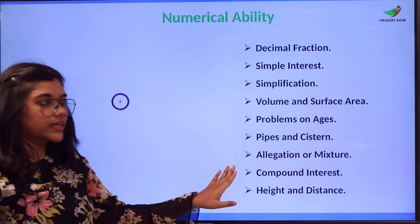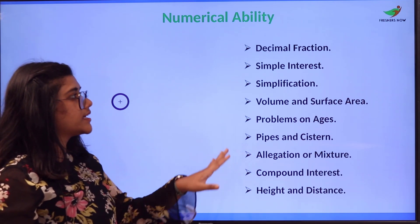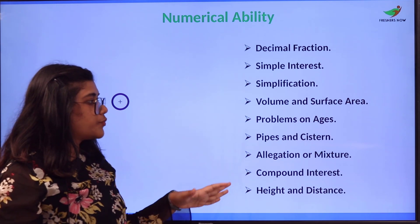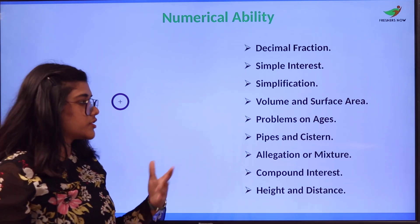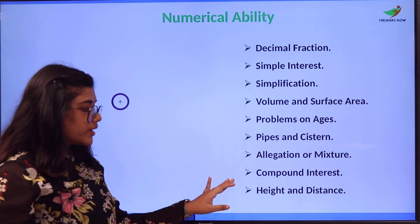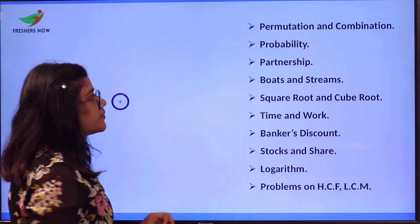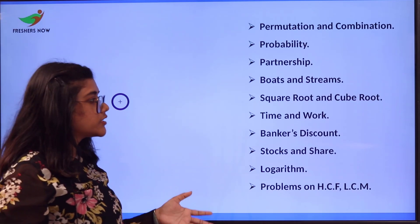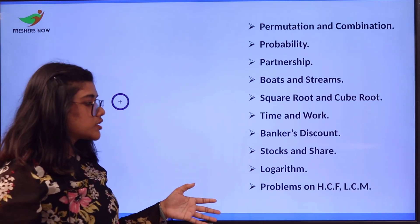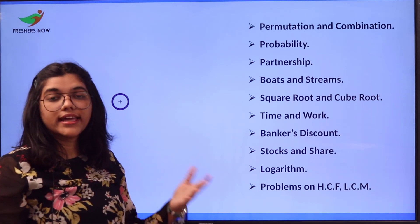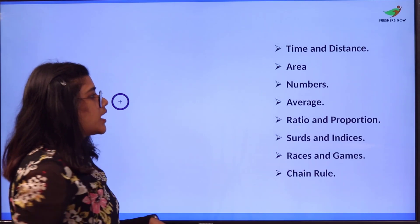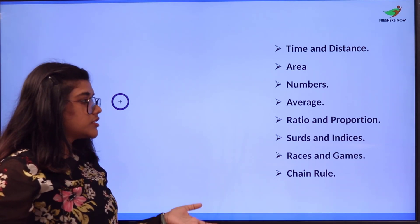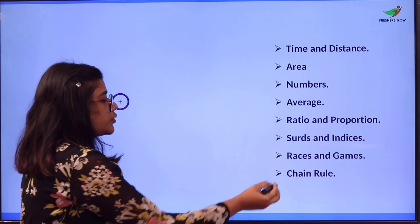For the section of numerical ability, concepts like: decimal fraction, simple interest, simplification, volume and surface area, problems on ages, pipes and cistern, allegation and mixture, compound interest, height and distance, permutation and combination, probability, partnership, boats and streams, square root and cube root, time and work, banker's discount, stocks and shares, logarithm, problems on HCF and LCM, time and distance, area, numbers, averages, ratio and proportion, surds and indices, races and games, and chain rule.